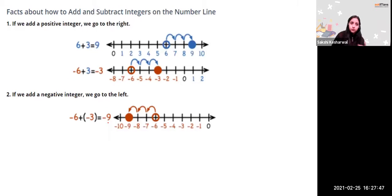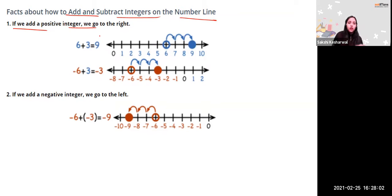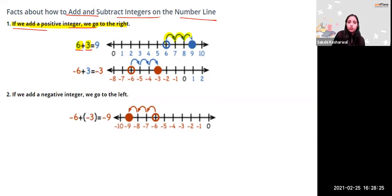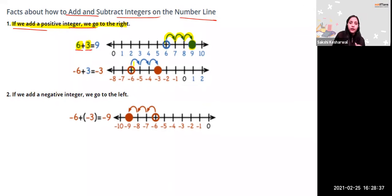Now, some facts about addition and subtraction of integers on the number line. When you add a positive integer, you move right. When you add a negative integer, you move left. For example: 6 plus 3 — start at 6, move 3 steps right, you reach 9. For minus 6 plus 3 — start at minus 6, move 3 steps right, you reach minus 3.